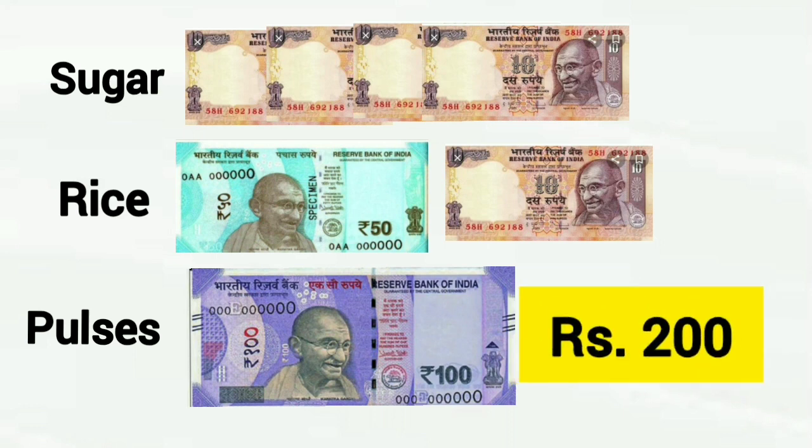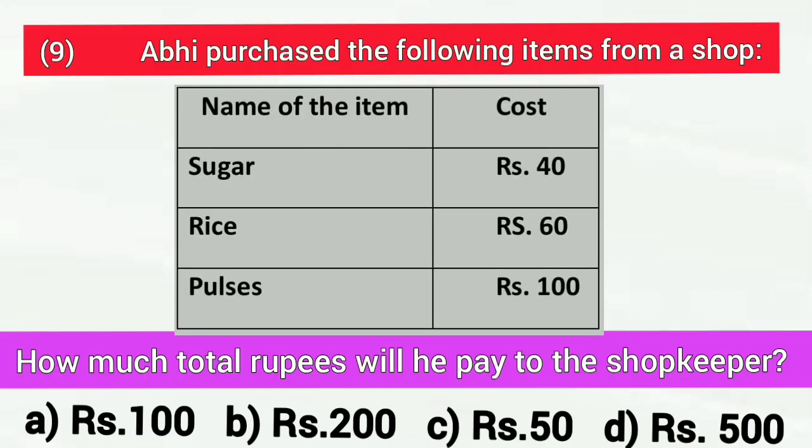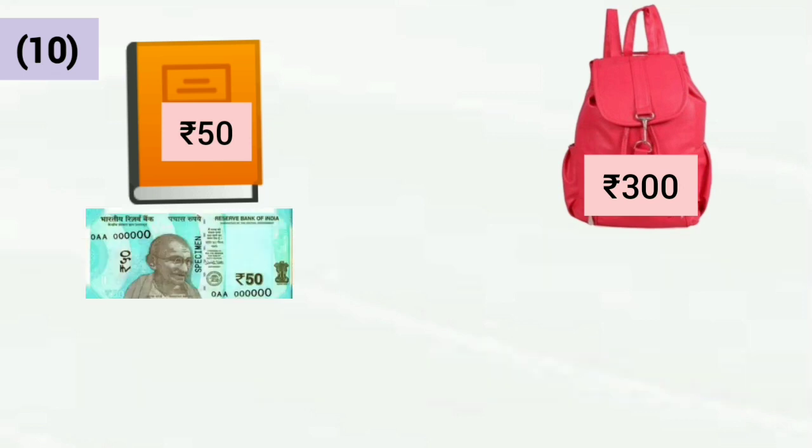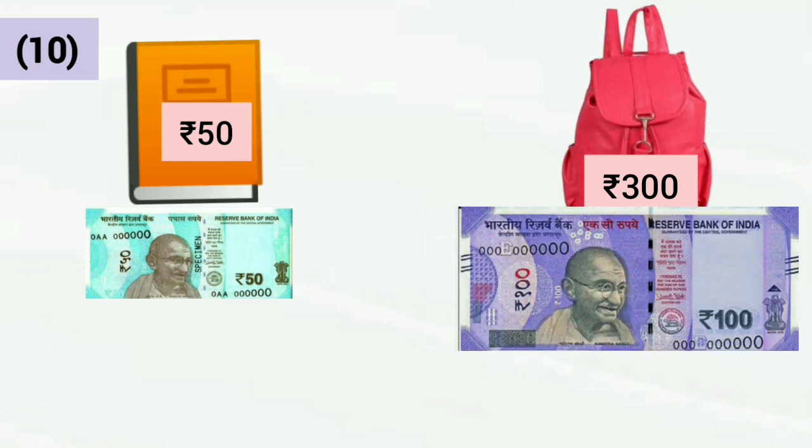This answer is given correct on option B. So, we will put tick on option B. Question number 10. What will be the total cost of the diary and the bag shown above? The cost of diary is Rs. 50 and the cost of bag is Rs. 300. Diary is Rs. 50 and bag is Rs. 300.